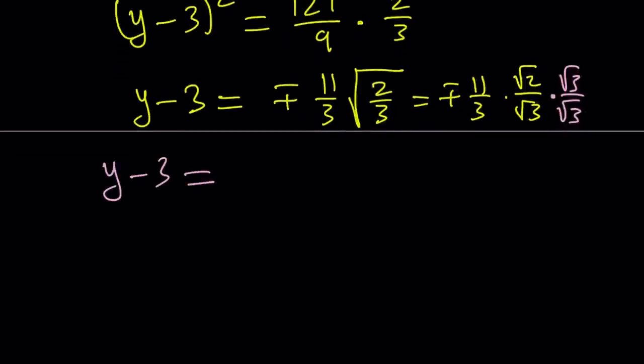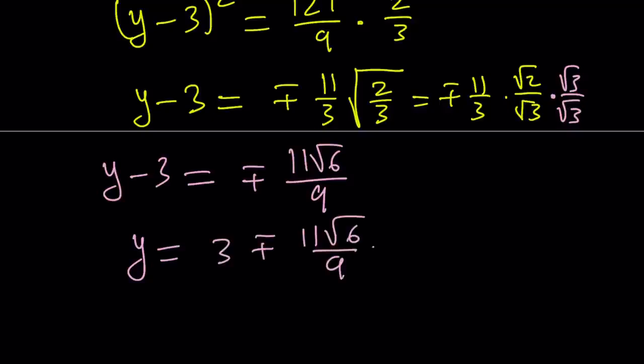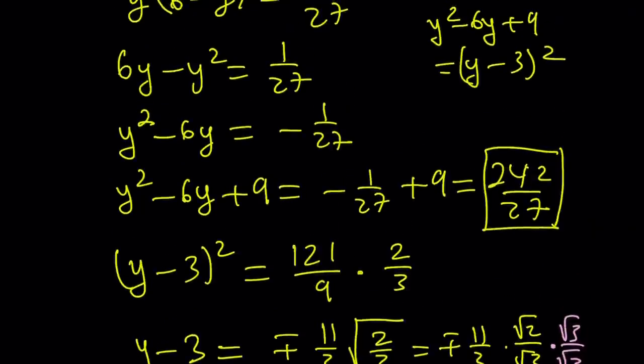So, from here, we get the following. y minus 3 becomes plus minus 11 root 6 over 3 times 3, which is 9. And, then, now, I'm going to add 3 to both sides. That's going to look like this: 3 plus minus 11 root 6 over 9, and that can be written as 27 plus minus 11 root 6 divided by 9, finally. Okay, I got my y value, but y was not my goal.